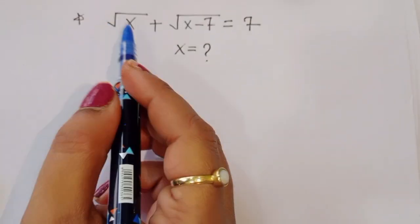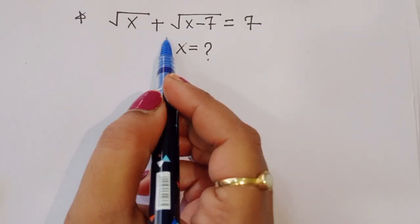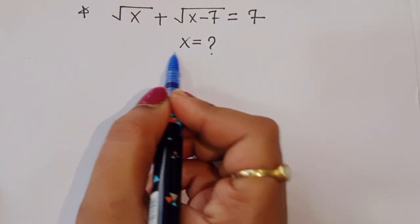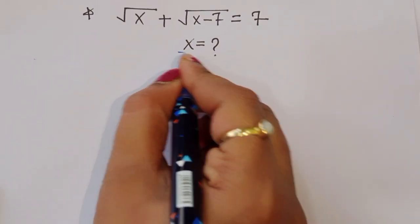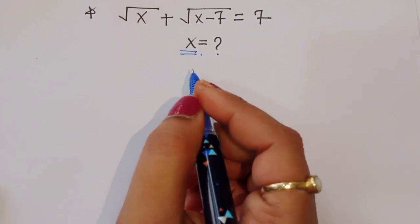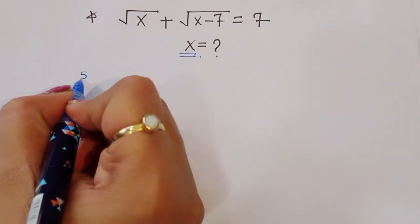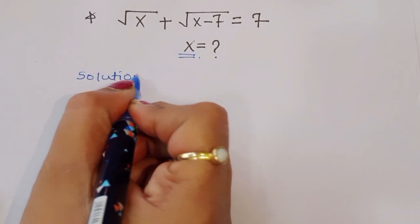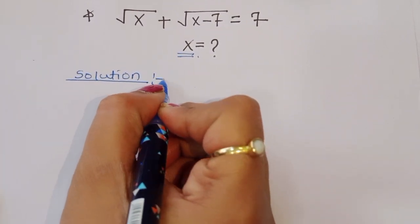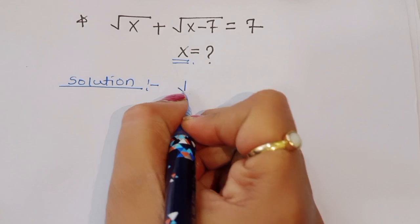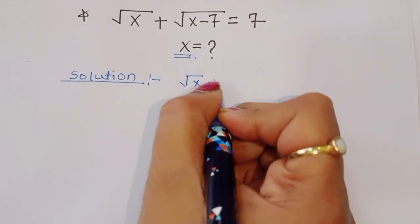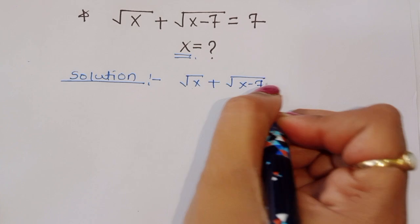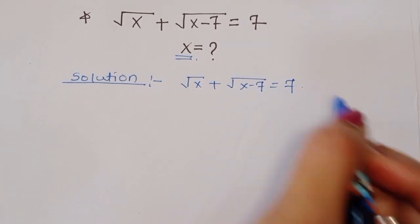The question is: given square root of x plus square root of x minus 7 is equal to 7, we have to find out the value of x. Let's see the solution. First, what is given: square root of x plus square root of x minus 7 is equal to 7.